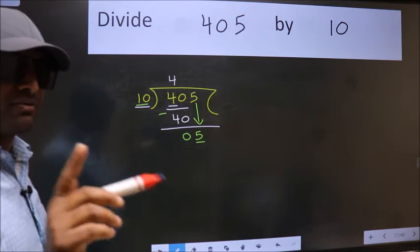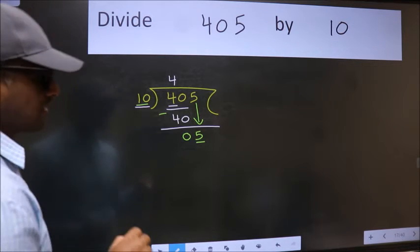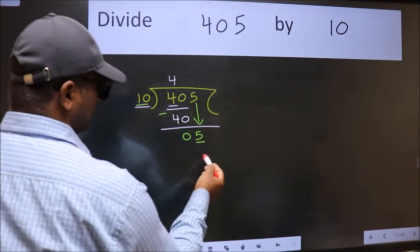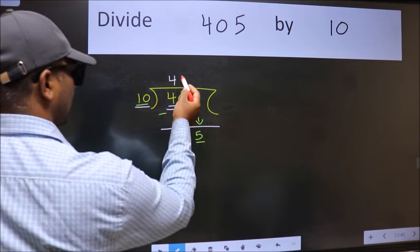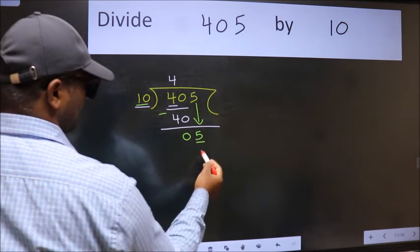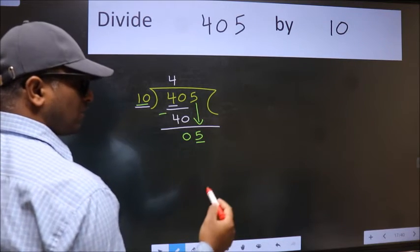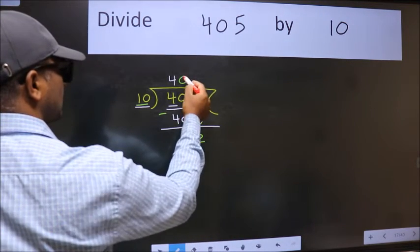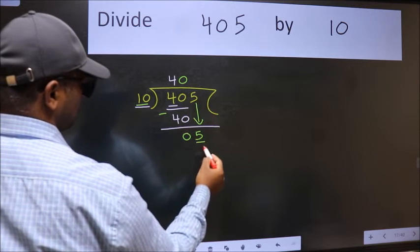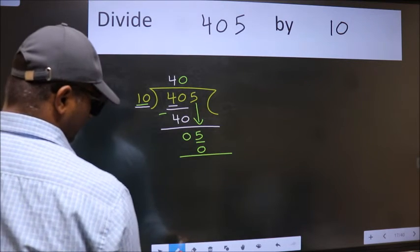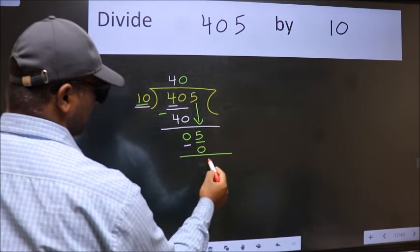Instead of that, what we should think of doing is which number should we take here. If I take 1, we will get 10, but 10 is larger than 5. So what we do is we take 0. So 10 into 0 is 0. Now we subtract, we get 5.